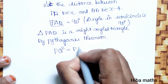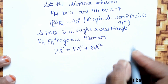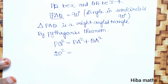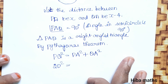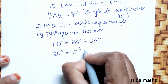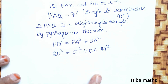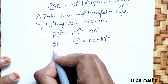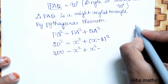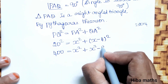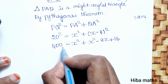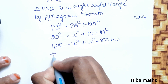By the Pythagorean theorem: PQ² equals PA² plus QA². So PQ² equals 20², which is 400, equal to x² plus (x minus 4)². Expanding using the formula (A minus B)² equals A² minus 2AB plus B²: x² plus x² minus 2 times x times 4, giving minus 8x, plus 4² which is 16.